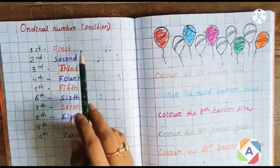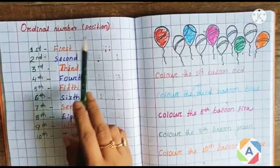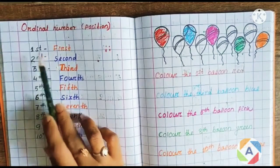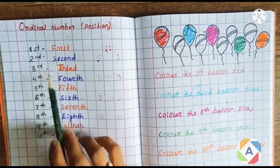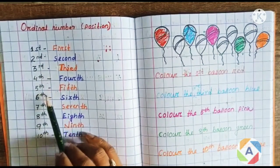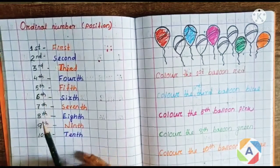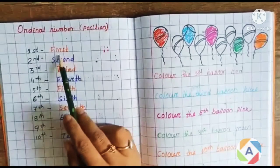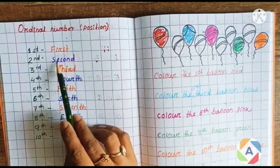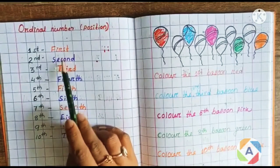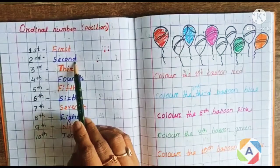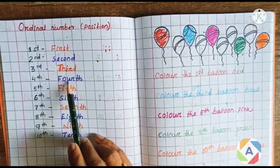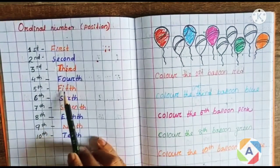This is the ordinal number. This is the first position, second position, third position, fourth, fifth, sixth, seventh, eighth, ninth, and tenth. We will write the words: first — F-I-R-S-T, second — S-E-C-O-N-D, third — T-H-I-R-D, fourth — F-O-U-R-T-H, fifth — F-I-F-T-H.